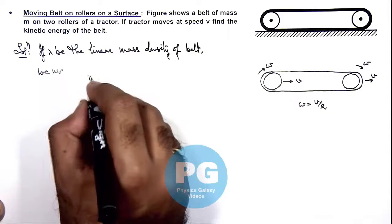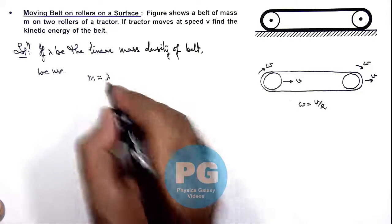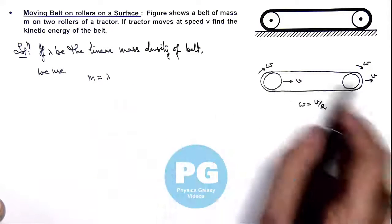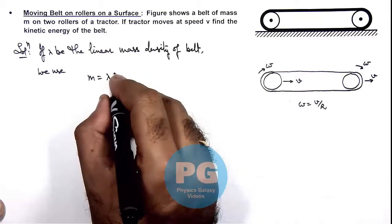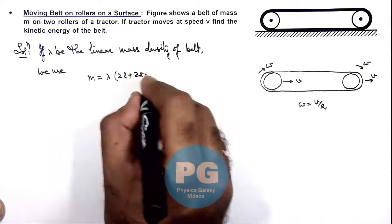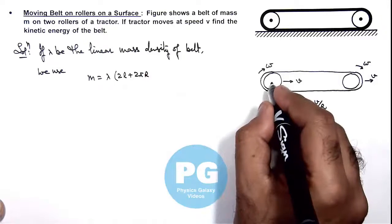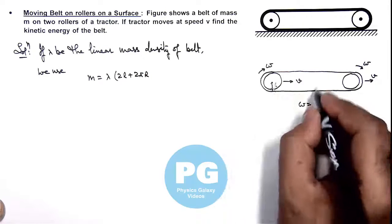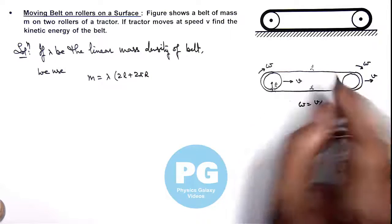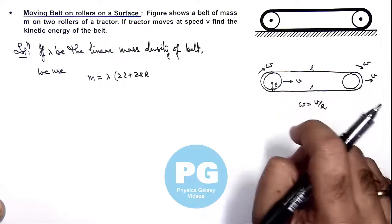m should be equal to lambda multiplied by the total length of the tube, which we can write as 2l plus 2πr, if we consider r as the radius of the roller and l is the length of horizontal sections of the belt.